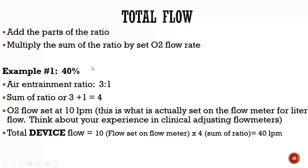To find the total flow of the device, take the air entrainment ratio for 40% — which is 3 to 1 — sum those values: 3 plus 1 equals 4. Multiply that sum by whatever the flow meter is set at. If a venti mask is set at 40% with the flow meter at 10 liters, 4 times 10 equals 40 liters total device flow. If you turn the flow meter to 12, then 4 times 12 gives you 48 liters.